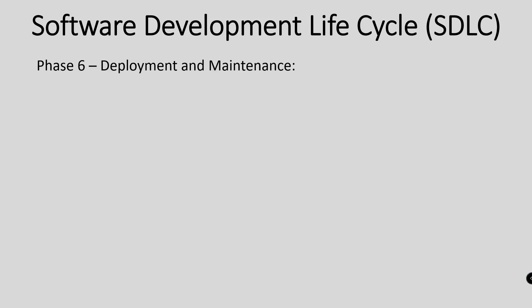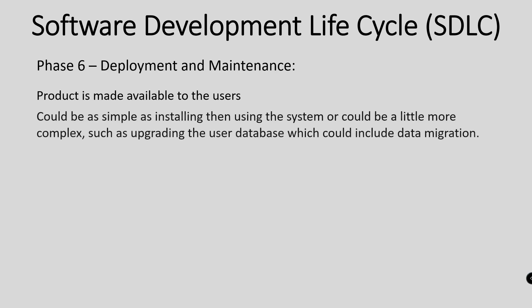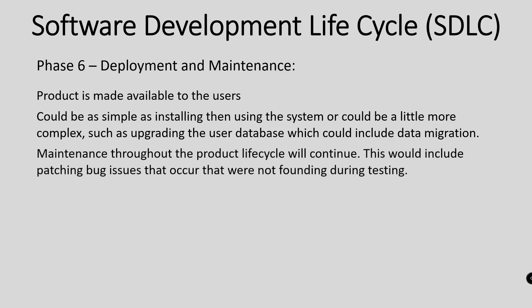Phase 6: deployment and maintenance. The product is made available to the users. This could be as simple as installing and using the system, or more complex such as upgrading the user database, which could include data migration. Maintenance throughout the product lifecycle will continue, including patching bug issues that occur that were not found during testing.